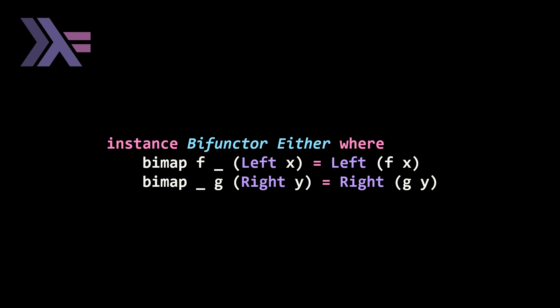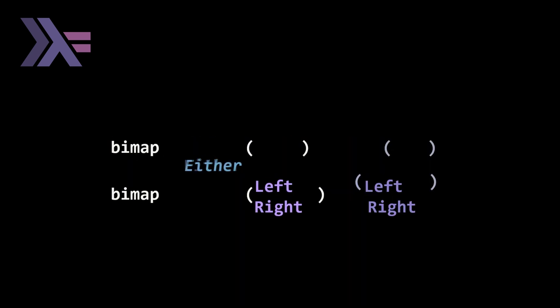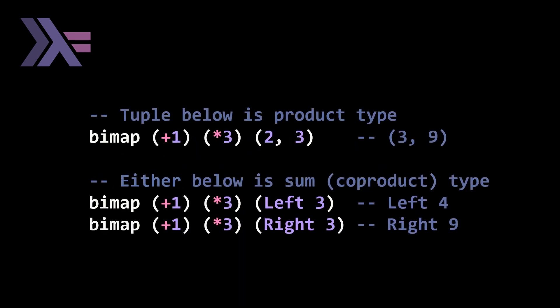And if we follow this up with more in practice examples, I found this super awesome example that came out of the meetup last Monday, where we have bimap being performed on a tuple, which is a product type, and then either bimap being performed on either, which is a sum or co-product type.